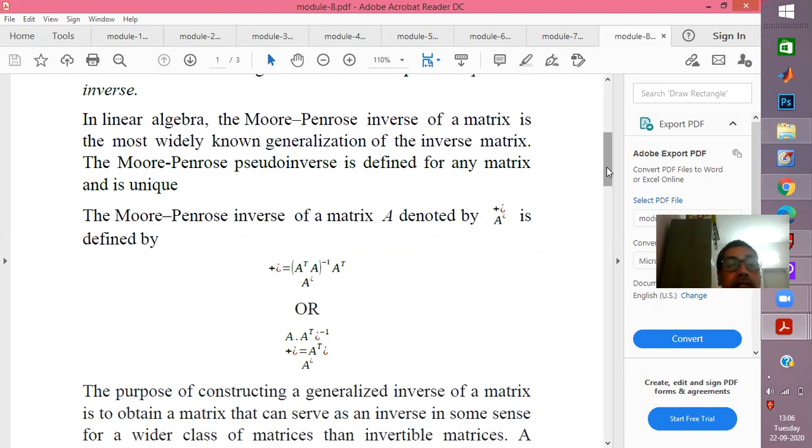In linear algebra, Moore-Penrose inverse is most widely known as the generalization of the inverse matrix. The beauty is it is existing for any kind of matrix, not necessarily square, even defined for rectangular matrices. And the Moore-Penrose inverse is a unique inverse.